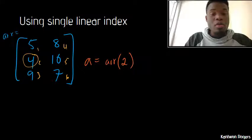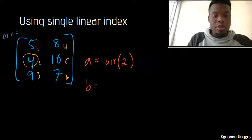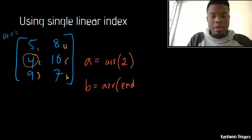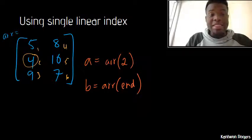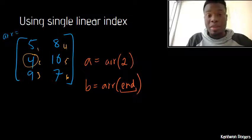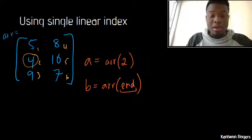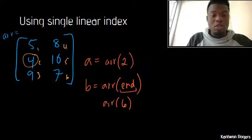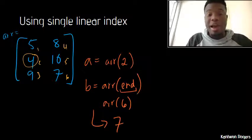And so remember when we talked about the keyword end with indexing vectors? That still applies here as well. So if I were to do something like B is equal to the array of end, this is saying the last element in my array using linear indices. So this translates to the number of elements inside of my array. In this case, that's 6. So therefore, this is equivalent to me saying array at 6, which gives me back the value 7.